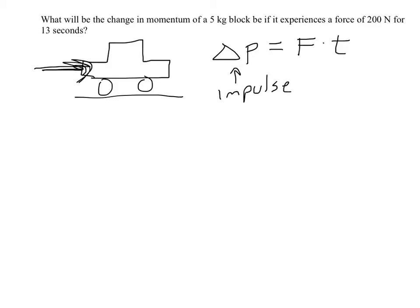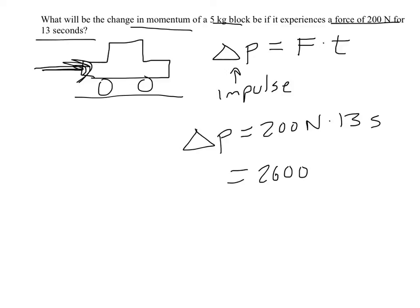So in this situation, what will the change in momentum be of a 5 kilogram block if it experiences a force of 200 newtons for 13 seconds? So I'm asked to find the change in momentum, and that is found by taking the force, 200 newtons, times the 13 seconds. And so 200 times 13 gives me 2600. And if you look at the units, you might say, oh, newton seconds. But that's not really the unit we're going to use.